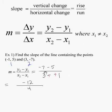So, let's simplify. Remember that subtracting negative is the same as adding a positive. So, negative seven minus five is negative 12. Three plus positive one is four. And when we reduce that, that's a negative three.